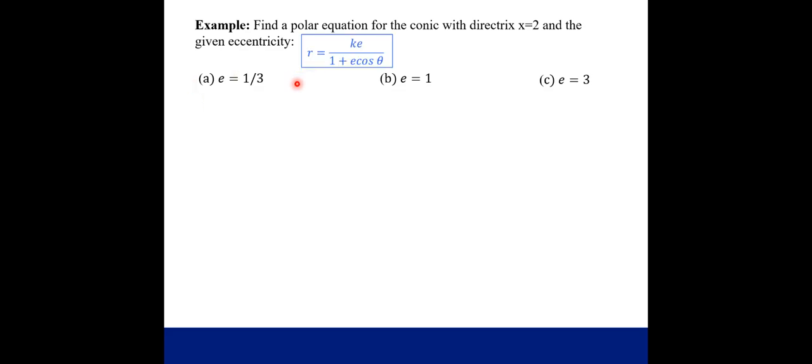So each of these, because this directrix I chose was a positive x value, this is a vertical line on the right side of the origin. So we're going to use our first of our four formulas that we just looked at. And again, that's because of this directrix. So we're just going to plug right into our formula.